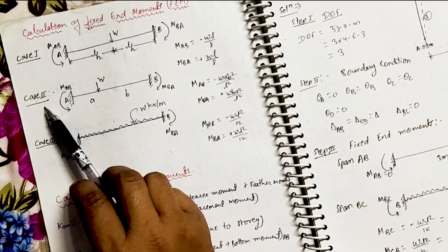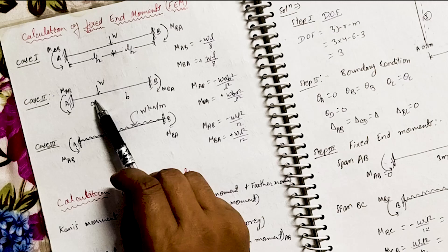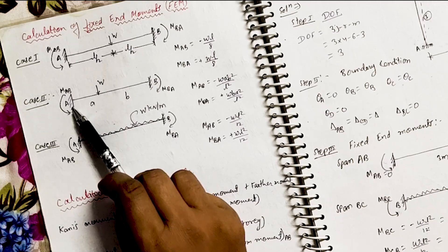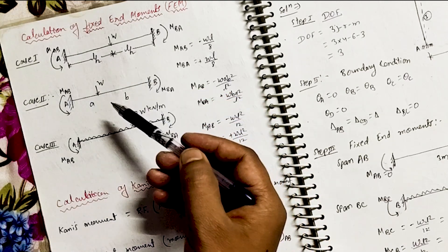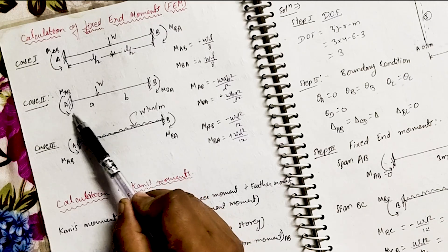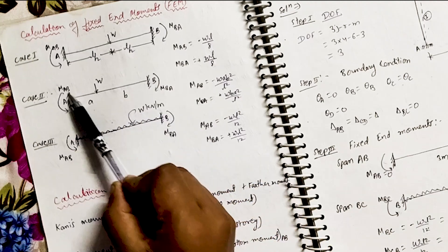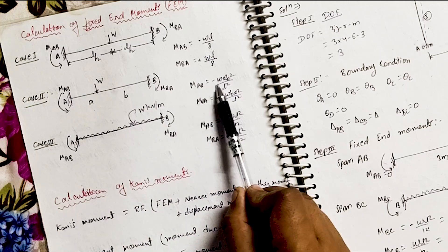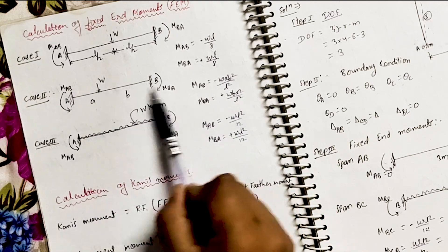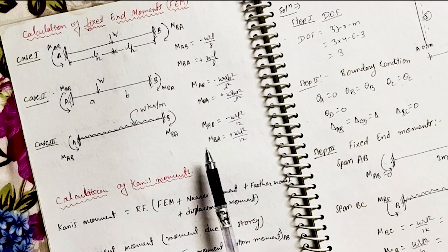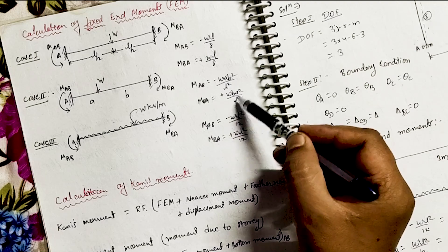Case 2: if the point load W is acting at a distance 'a' from support A (and distance 'b' from support B), meaning the load is not at the center of the beam. In this case, the fixed end moment at joint A is M_AB = −W·a·b² / L², and the fixed end moment at joint B is M_BA = +W·b·a² / L².